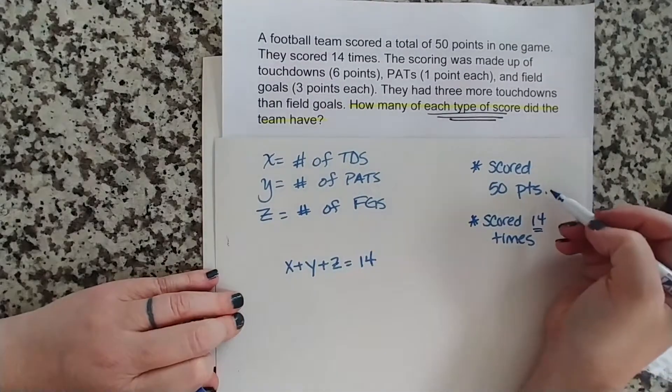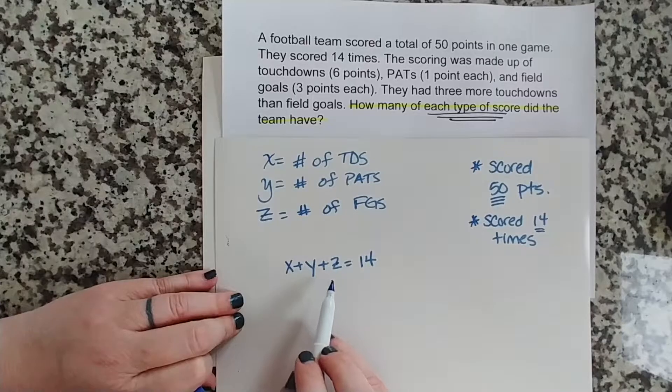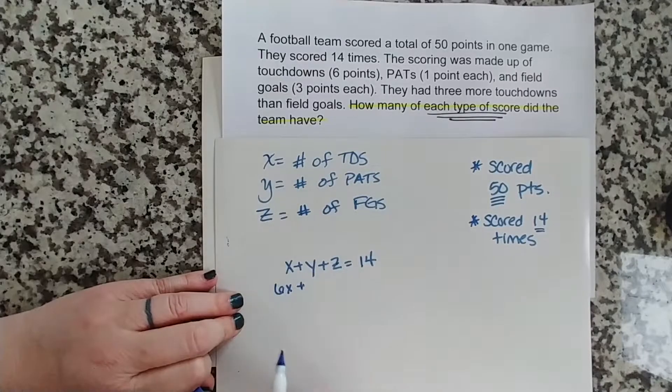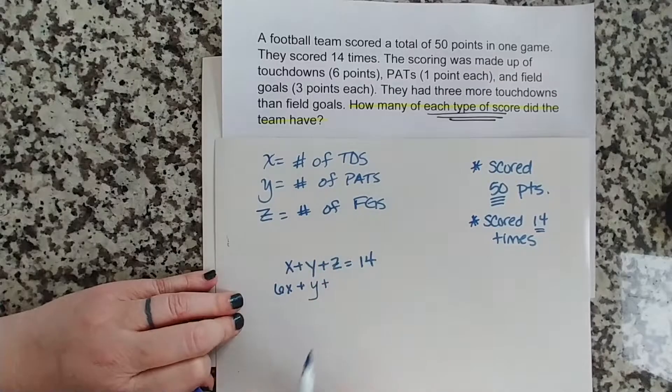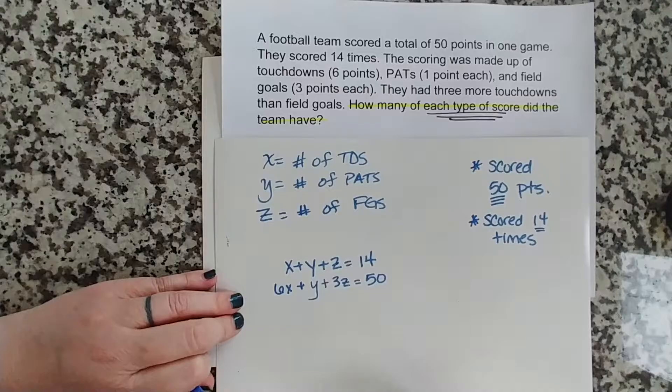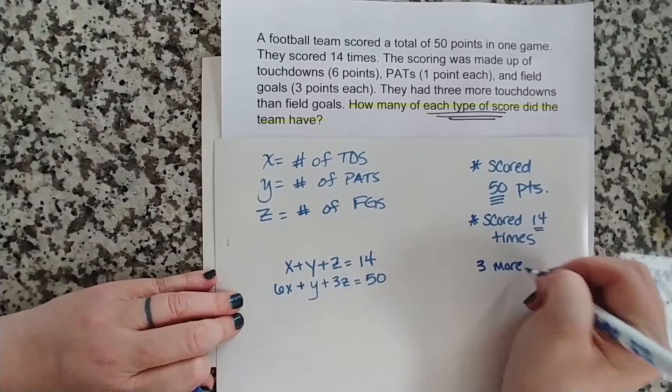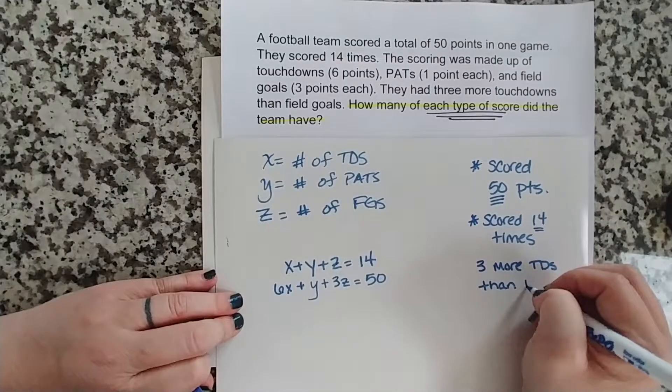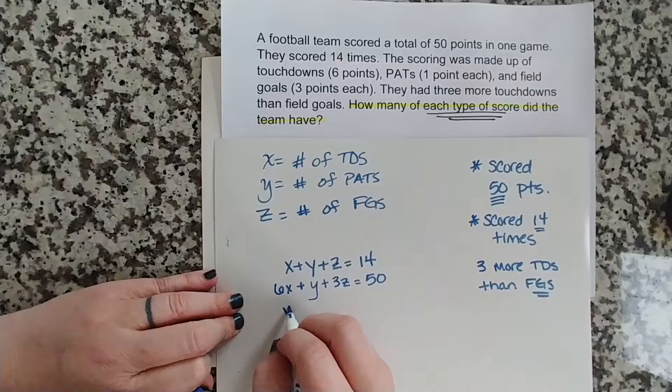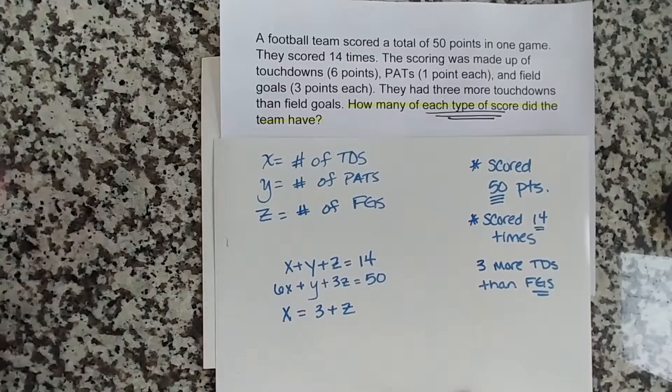Well, great. So let's work with this scored 50 points. So if you scored 50 points, and it was made up of touchdowns, point after touchdowns, and field goals, then we have to associate points with each of these. So each touchdown would give us 6 points. So 6X plus each PAT gives us 1 point, so just Y. Plus each field goal gives us 3 points, so 3Z. There we get our 50 points. So now because we have 3 variables, we need 3 equations. So we need another piece of information. And it does tell us that they had 3 more touchdowns than field goals. So that means X, our number of touchdowns, would be equal to 3 plus Z. And there we have our 3 equations.